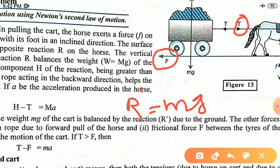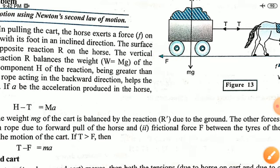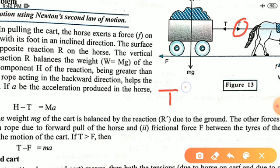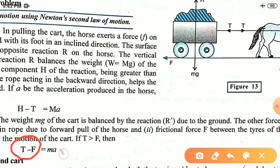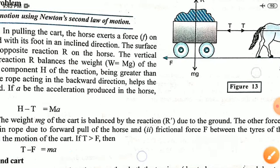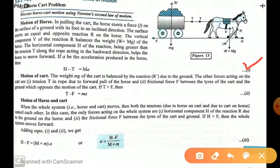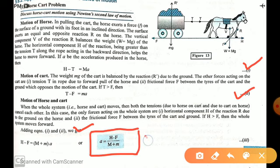The cart will move only when the tension force T is greater than the friction force f. Adding the two equations — H − T = MA for the horse and T − f = mA for the cart — gives the acceleration of the entire horse and cart system. On the basis of Newton's third law of motion, we can understand and explain how a horse is able to move a cart.